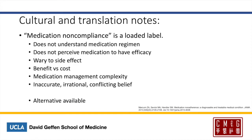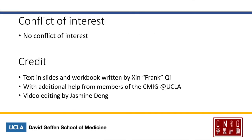Additional factors include the complexity of managing medications, and inaccurate, irrational, or conflicting beliefs about taking medications. The patient may also perceive alternatives available to their treatment — for example, a patient with limited English proficiency would have difficulty understanding their medication regimen, especially if it's written in English. If the doctor did not use an interpreter to explain efficacy, they may not perceive it as useful. The patient may also prefer traditional Chinese medicine to Western medicines for long-term diseases. These factors are quoted from a JAMA article, 'Medication Non-Adherence: A Diagnosable and Treatable Medical Condition.'